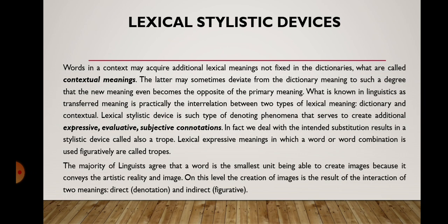Words in a context may acquire additional lexical meanings not fixed in the dictionaries, what are called contextual meanings. These may sometimes deviate from the dictionary meaning to such a degree that the new meaning becomes the opposite of the primary meaning. What is known in linguistics as transferred meaning is practically the interrelation between two types of lexical meaning: dictionary and contextual. A lexical stylistic device is such a type of denoting phenomena that serves to create additional expressive, evaluative, subjective connotations.